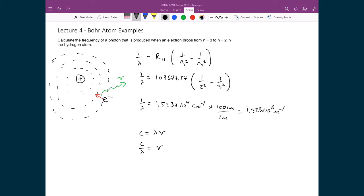Well, c over λ, that's just c times this wave number: 2.998 times 10⁸ times 1.523 times 10⁶. So that means the frequency that's associated with this transition in the hydrogen atom is 4.567 times 10¹⁴ inverse seconds.